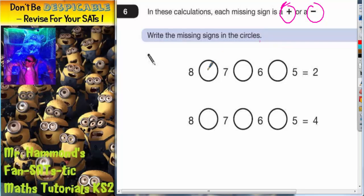So the first thing you could do is try everything with a plus and see if you're lucky, you'll get it straight away. If you're not lucky, see how far out you are. So 8 plus 7 is 15, 15 plus 6 is 21, 21 plus 5 is 26. Now we want it to be 2, so we are miles out. We're a long way out.